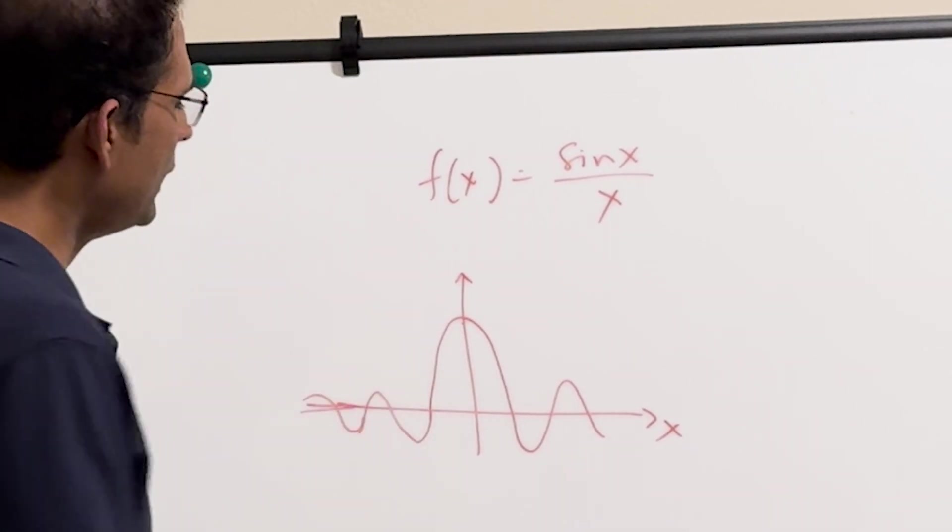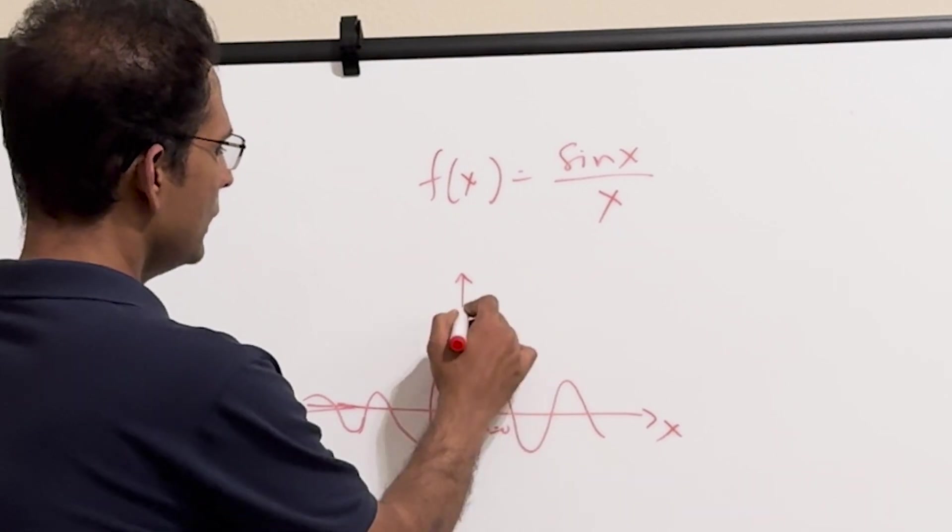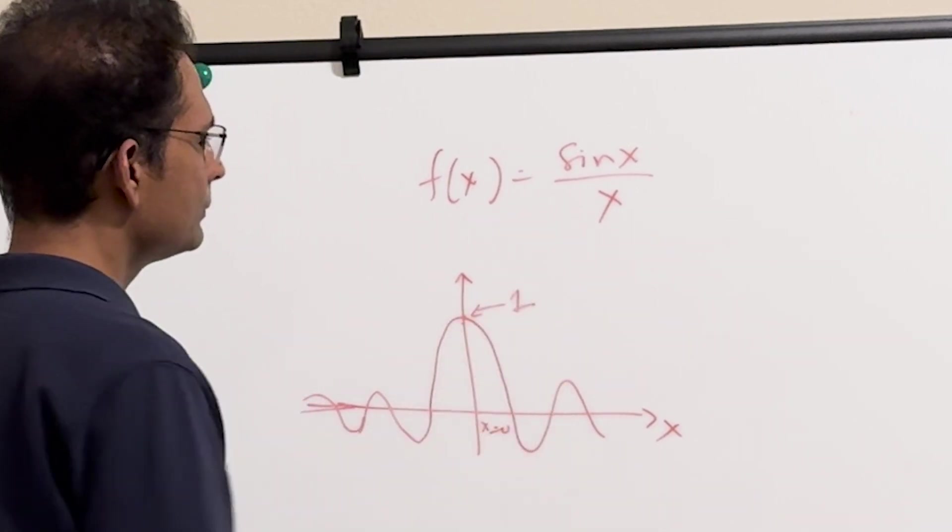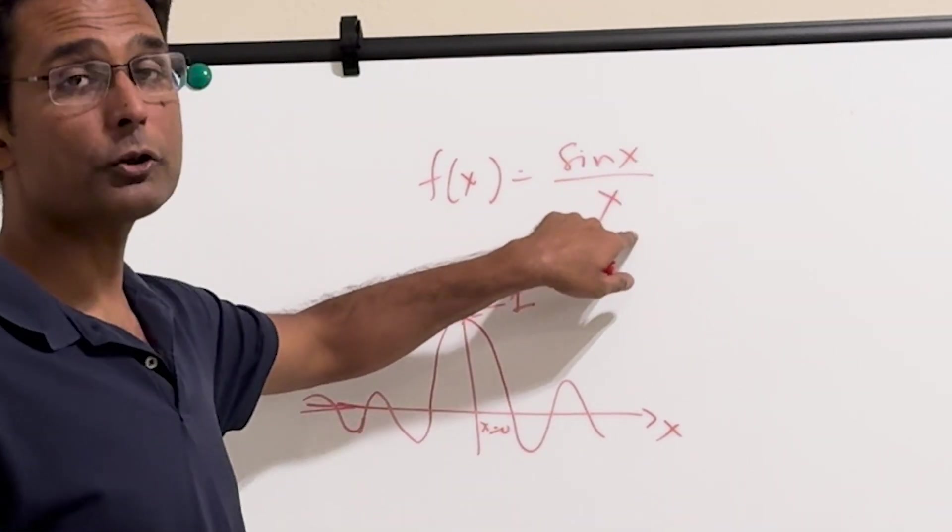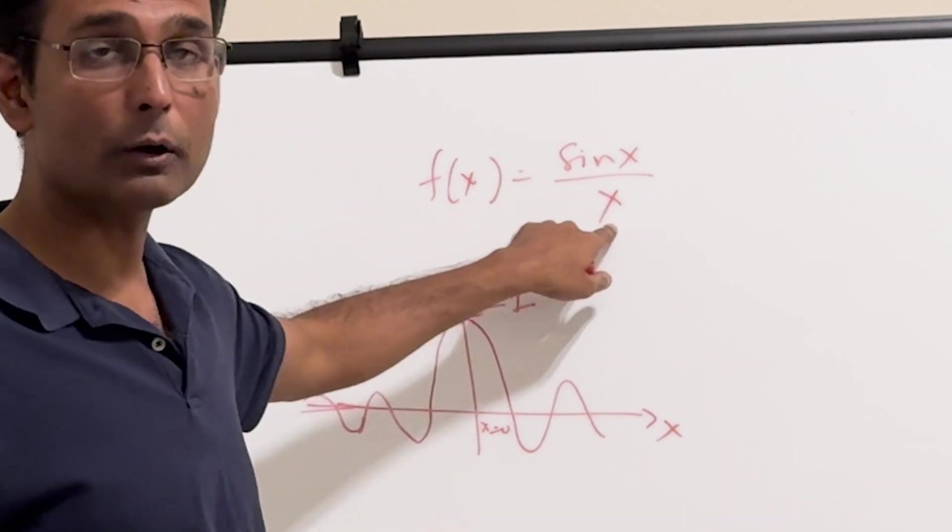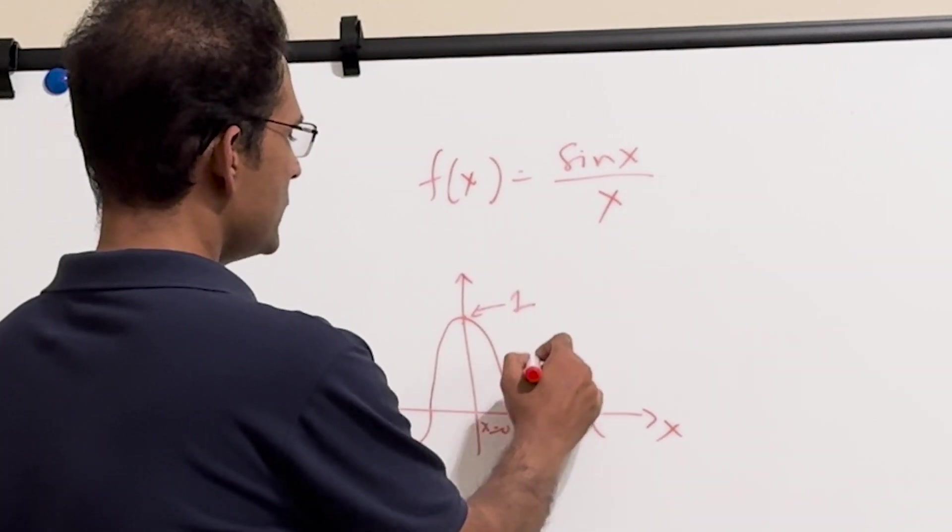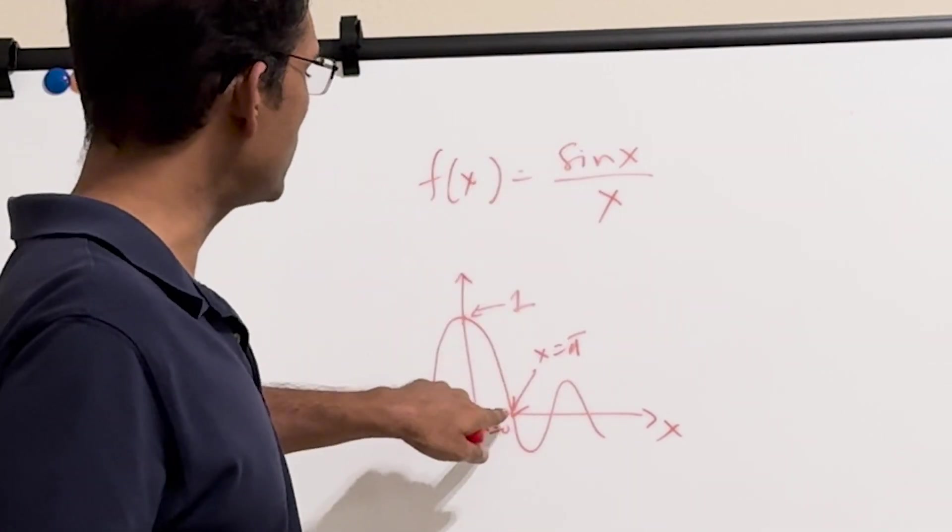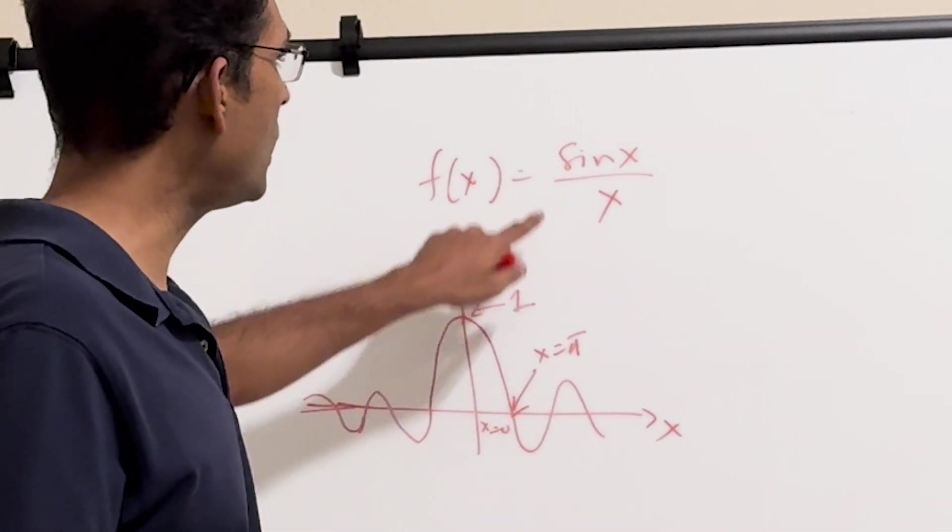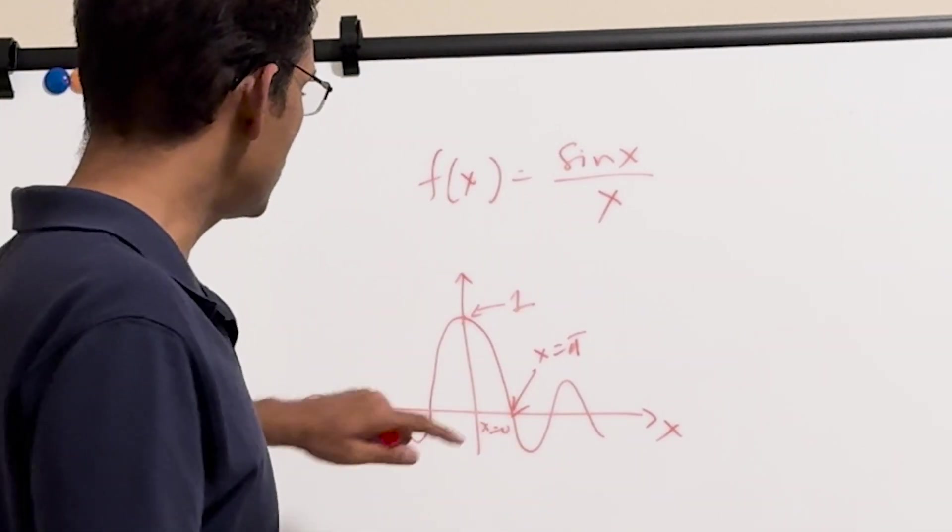So what happens is that at x equal to 0, this value is 1. So when x approaches 0, sin x over x goes to 1. And at this point, which is x equal to pi, sin pi is equal to 0, so the function y is equal to 0.